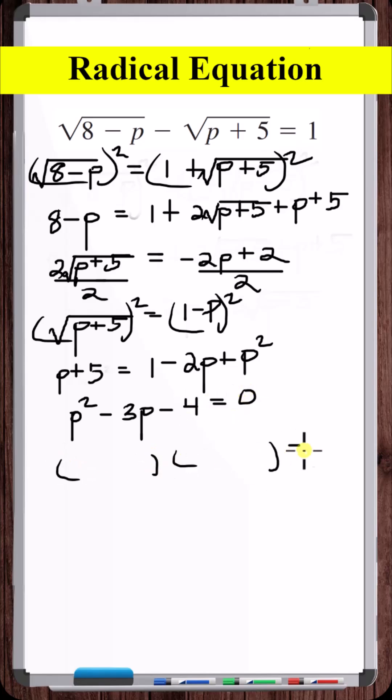Let's factor the left side. Minus 4 plus 1. p is equal to 4 and p is equal to minus 1.